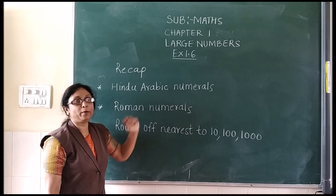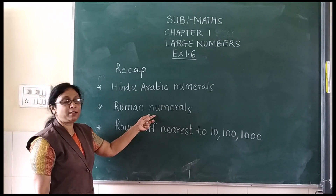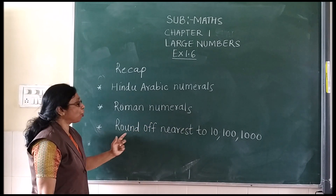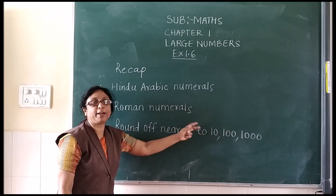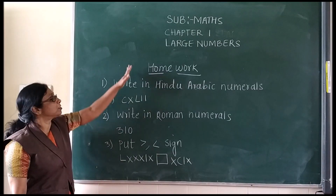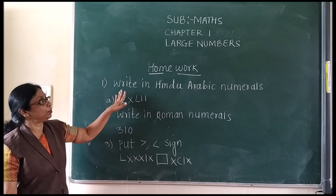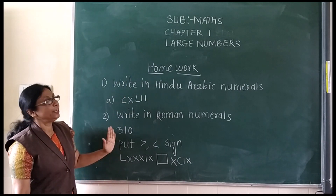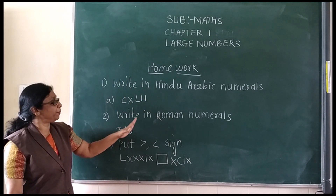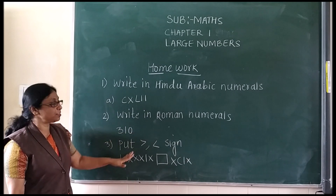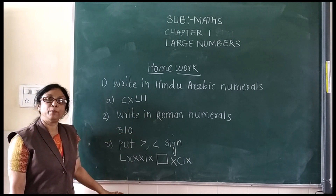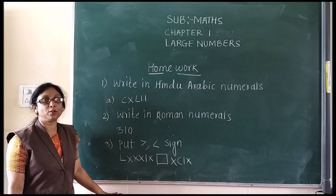In the recap we see what we have covered today: Hindu Arabic numerals, Roman numerals, round off nearest to 100 and 1000. This is the homework — do all of this in your graph copy: Hindu Arabic to Roman numerals and put the signs. We will meet in the next video. Till then take care. Thank you.